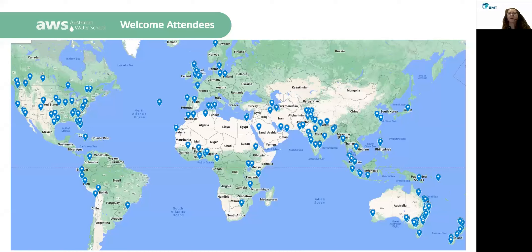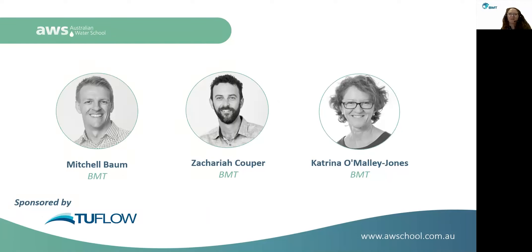We'll have a quick look at where people are joining us from today. We've got a great spread of people from all around the world, and I think there's going to be some really valuable insights you'll be able to take away regardless of whether your projects are coastal or riverine. Dr Mitchell Baum is a coastal engineer specialising in numerical modelling.